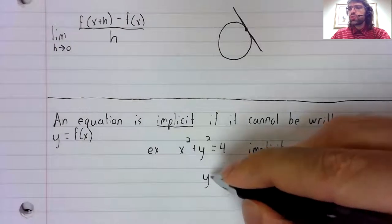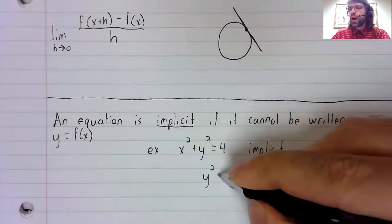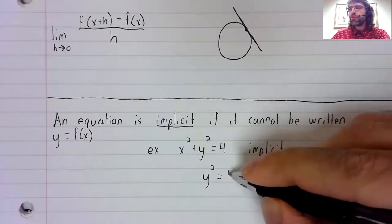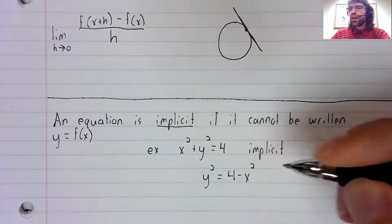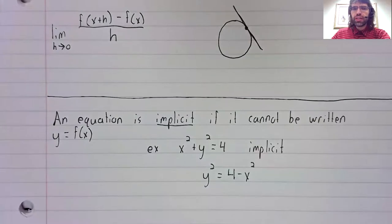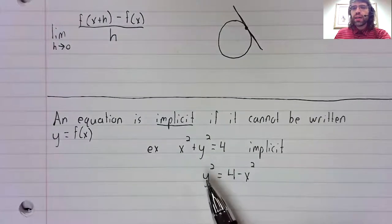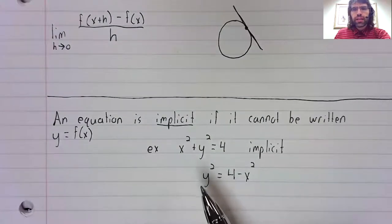This is an example of an implicit function, because you cannot get y by itself on the left-hand side of the equality. You could get y squared by itself.